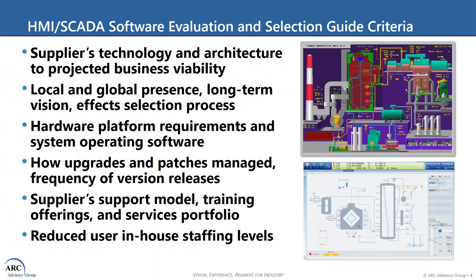Now, based on these strategic issues that you identified, what are some of the selection guide criteria that impact users of HMI SCADA Software? The selection criteria ranges from suppliers' technology and architecture to projected business viability. It takes into account a supplier's local and global presence, along with its long-term vision, which has a significant effect on the evaluation process.